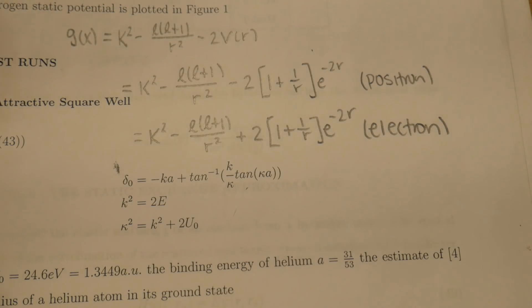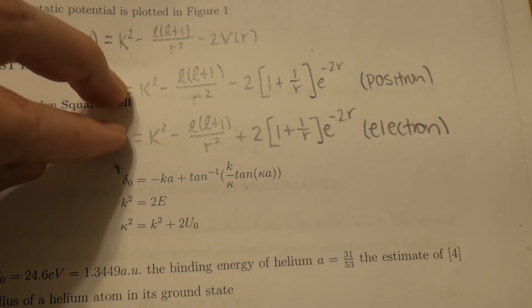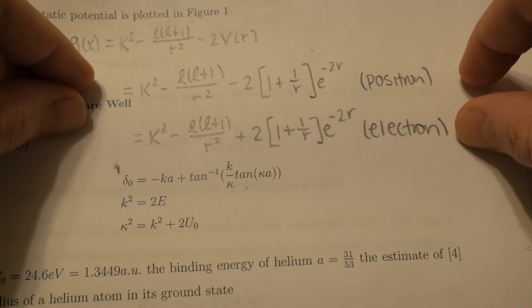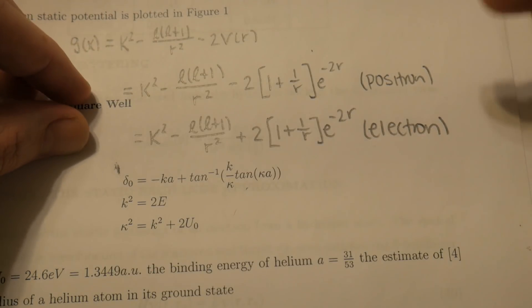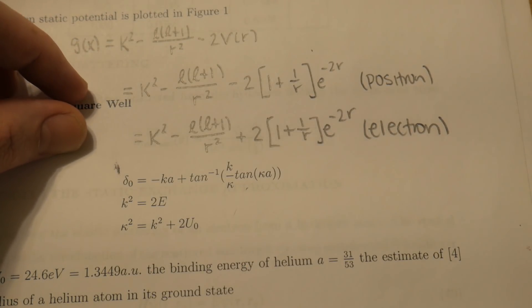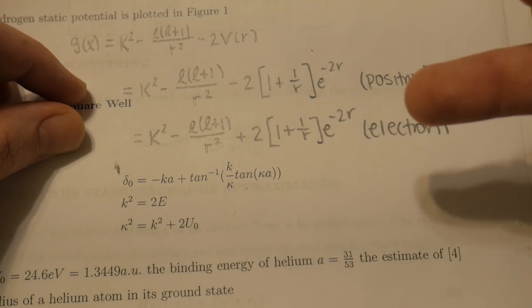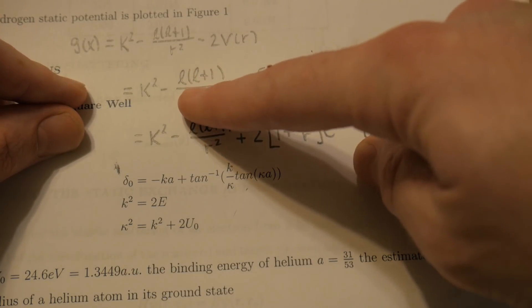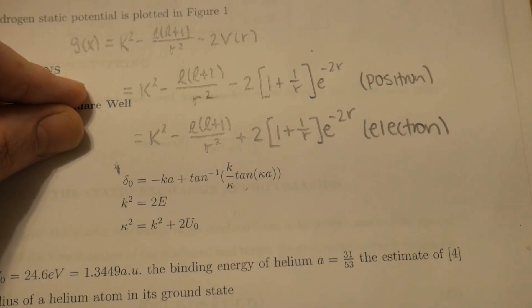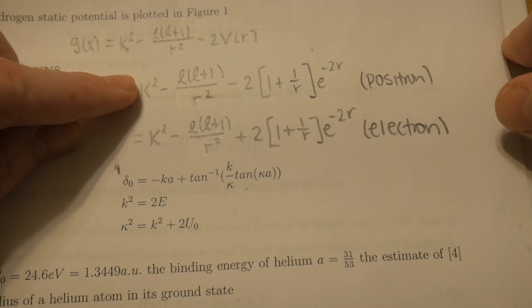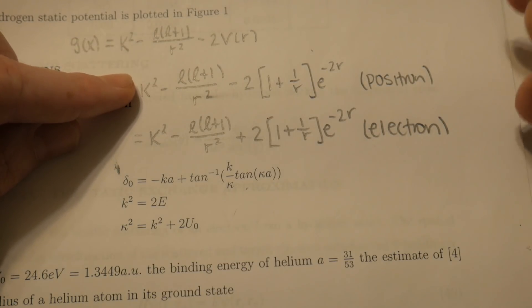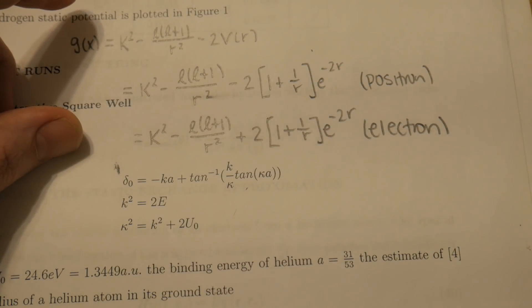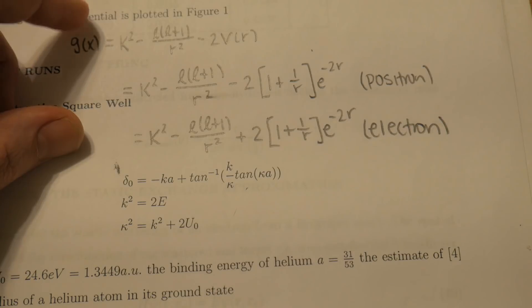The whole thing I was testing with my thesis so far was making sure that I could solve the Schrödinger equation for these two potentials. The first one corresponding to the static potential for a positron and then for an electron, where L are the quantum numbers for angular momentum, K is just some input constant, and R is the independent variable — just the radius.